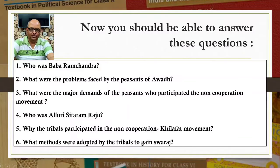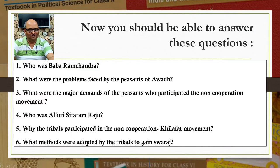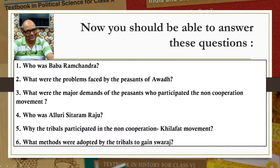I hope you understood the topic properly. You should now be able to answer these questions: Who was Baba Ramchandra? What were the problems faced by the peasants of Awadh? What were the major demands of the peasants who participated in the non-cooperation movement? Who was Alluri Sitaram Raju? Why did the tribals participate in the non-cooperation Khilafat movement? What methods were adopted by the tribals to gain Swaraj? In the next class we will continue with the same unit and discuss Swaraj in the Plantations. Till then, keep reading and have a nice time. Thank you.